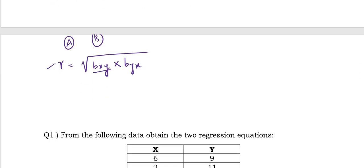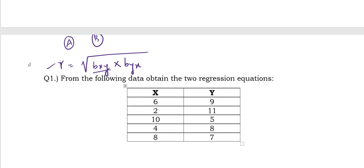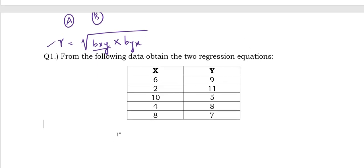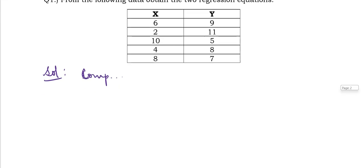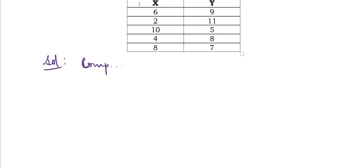Now moving to the main question — we are going to use the same question we saw in the direct method, and apply the arithmetic mean method to it. Whatever method you apply, you should keep in mind that the answer will be the same. Let us write: computation of two regression coefficients. The table heading will be the same.